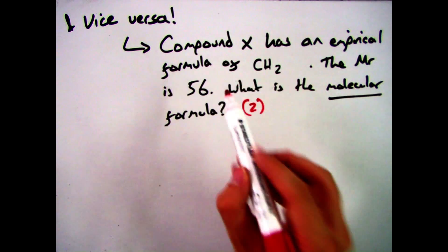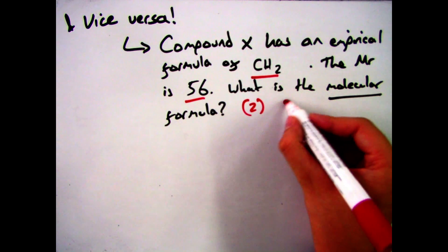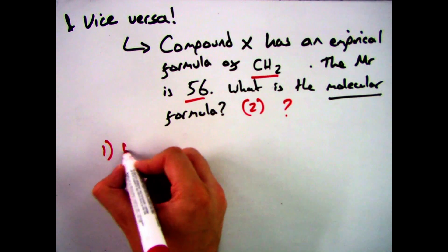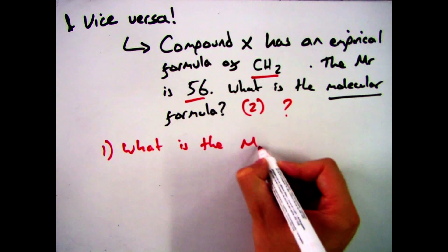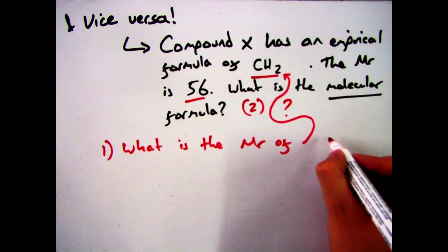Okay, in this situation then, you'll be given an empirical formula, which is CH2, and be told the molecular mass, the MR, and be asked what the molecular formula is. So the first thing you need to do is work out what the actual molecular mass of the empirical formula is. So that is, what is the molecular mass of CH2?